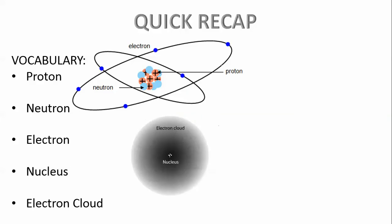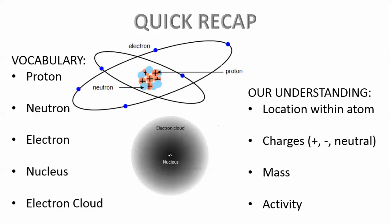You can see right here, the nucleus is a very small but massive area in the center of the atom, and the electron cloud takes up most of the volume of the atom. We should now have an understanding of these terms in regards to their location within the atom, the charges that they have, their mass, and their activity.